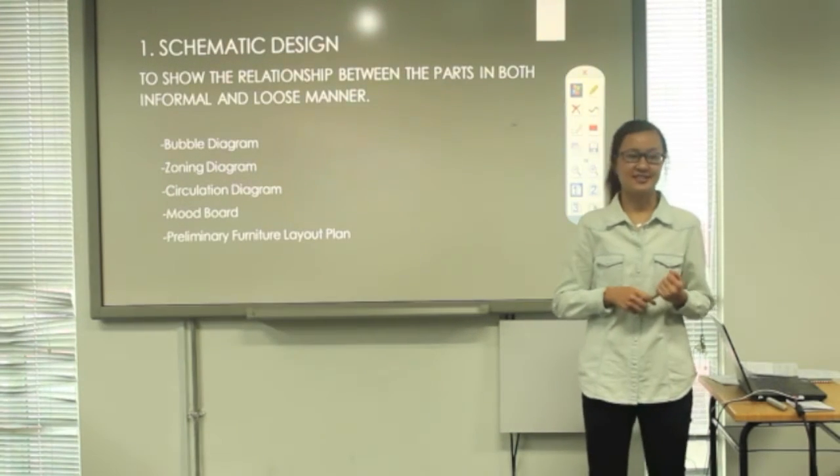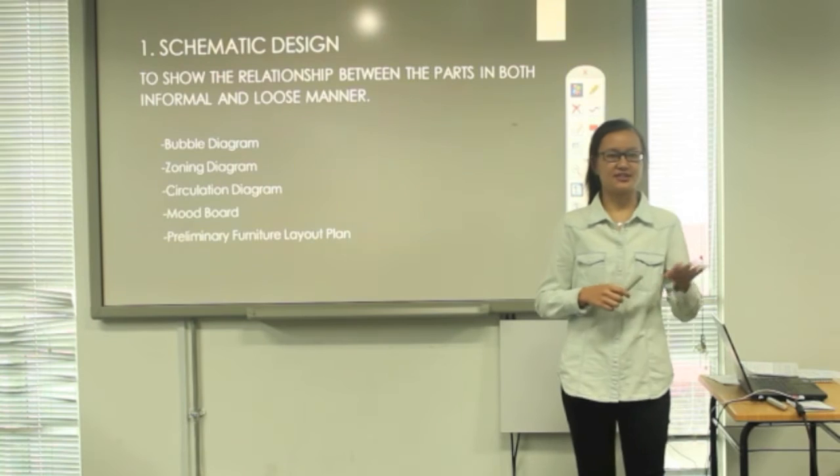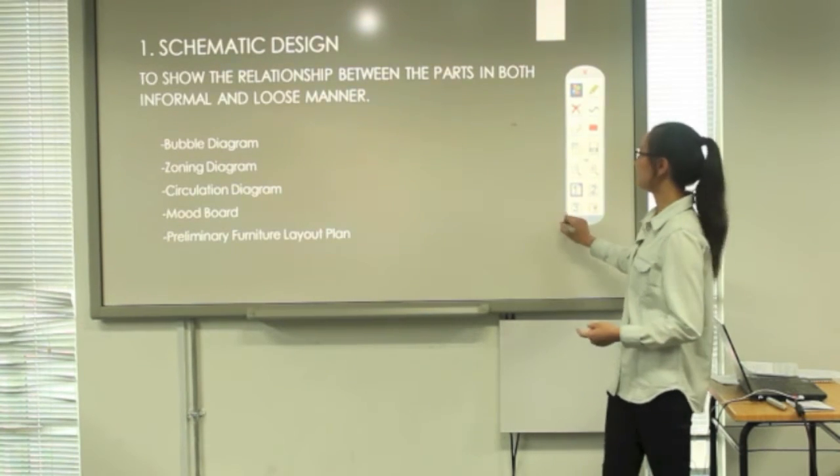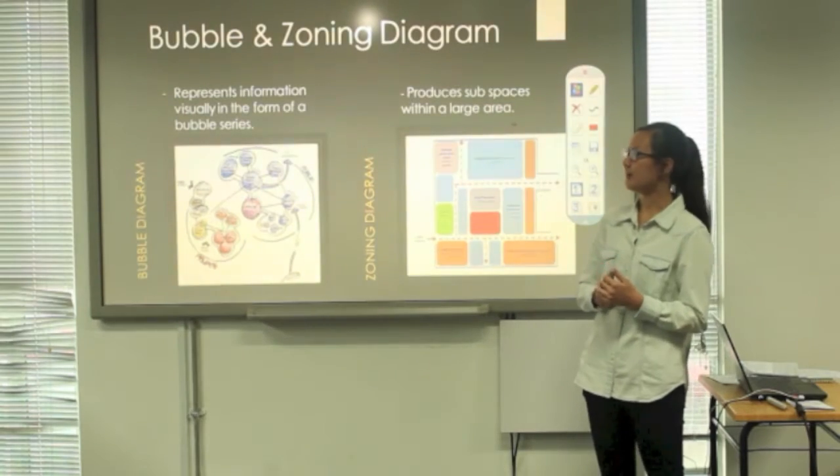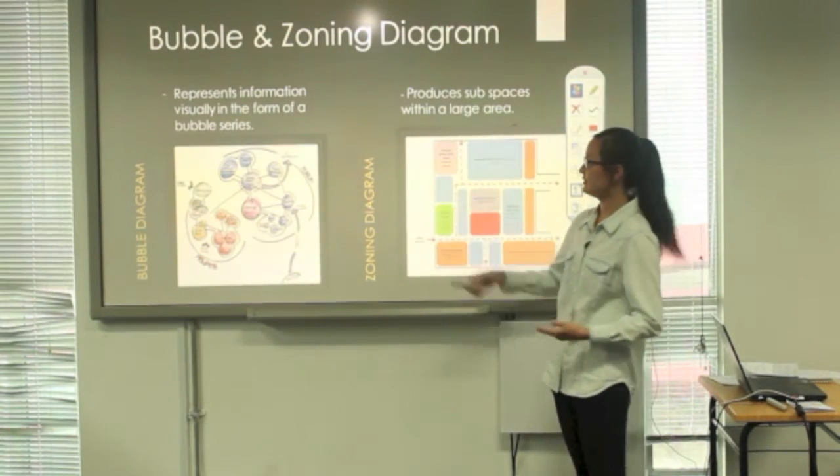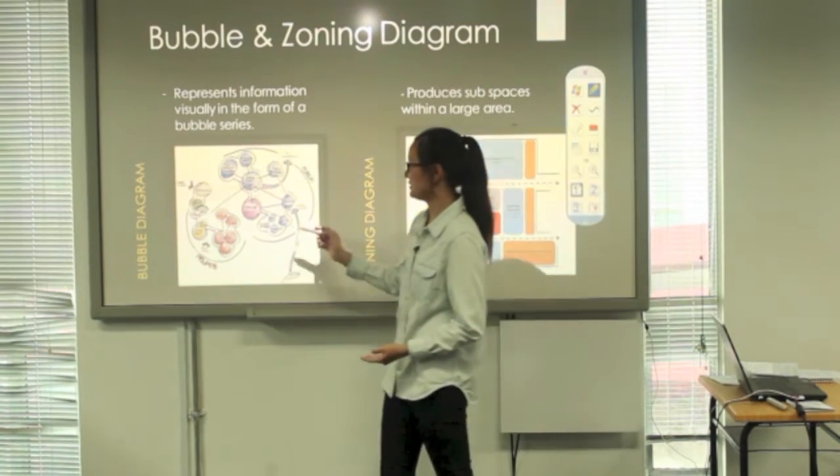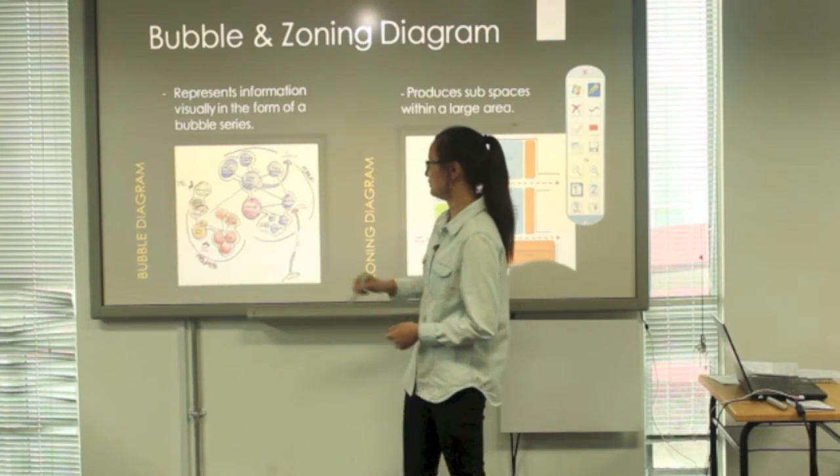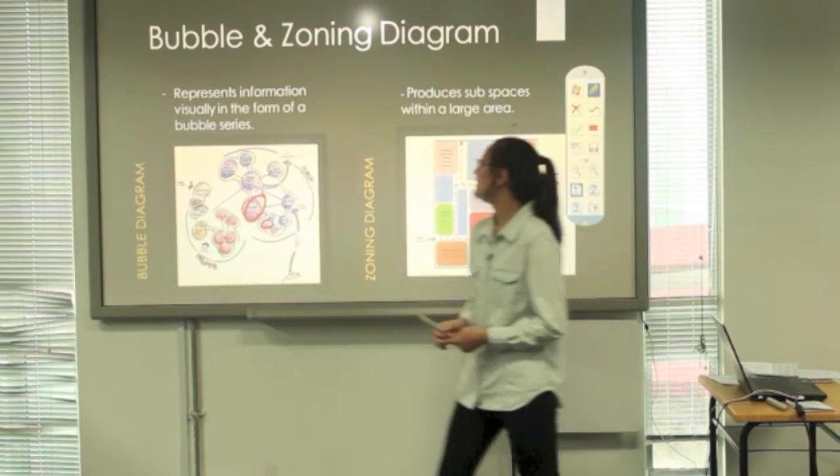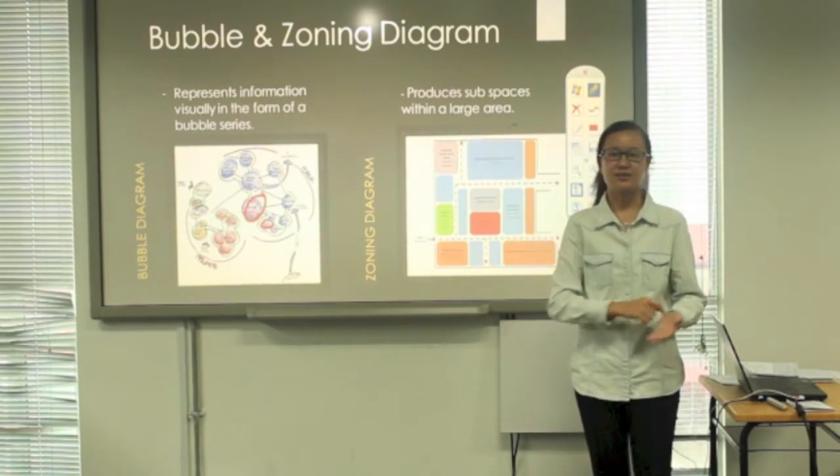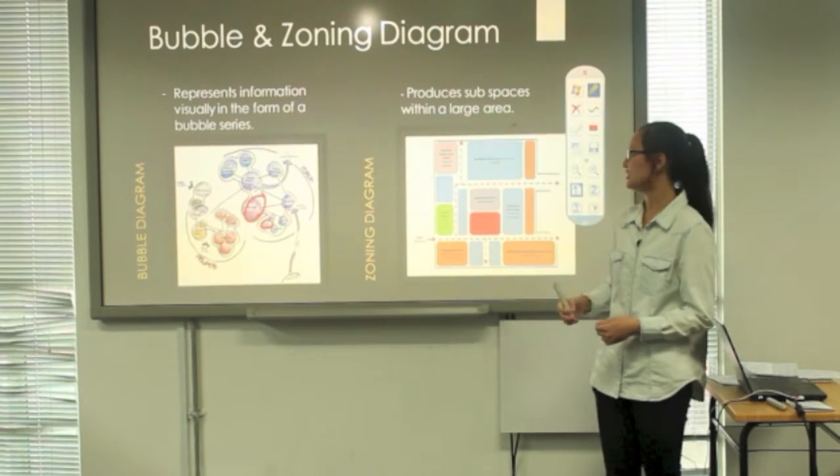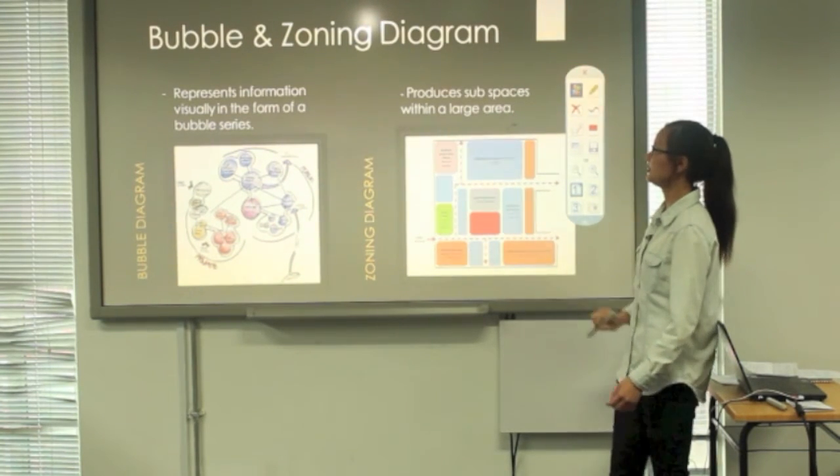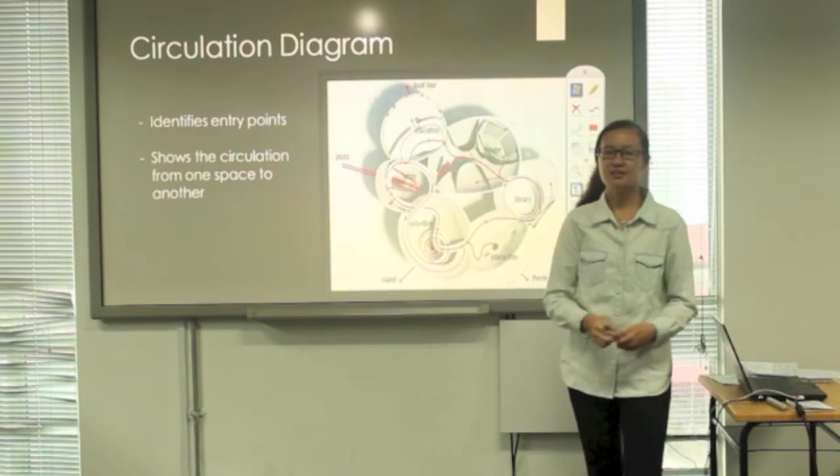The first type of interior design drawing is schematic design. Schematic design shows the relationship between both parts in a loose and informal manner. The first part is bubble diagram. Bubble diagram represents information visually in a diagram series. As for this diagram, it shows the private area and public area. It also shows you the approximate sizes of the rooms. As for zoning diagram, it produces subspaces within a large area. It is pretty similar to bubble diagram. It shows that it is more traditional and more organized compared to bubble diagram.